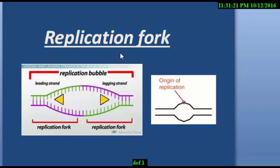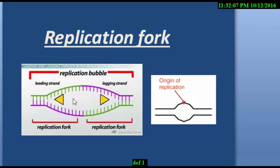The first topic is replication fork. First we have to know what is the replication fork. Here you see that this is a DNA — here is one strand and here are two strands of DNA. When replication occurs, the two strands break down in that region. That region is the replication fork, and that structure forms within the nucleus. Replication is found in the DNA, and it is created by helicase — the helicase enzyme creates the replication fork.